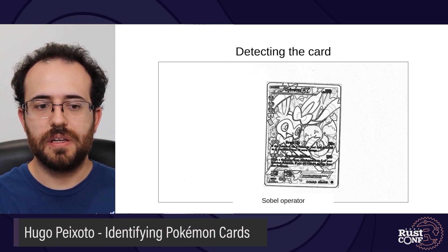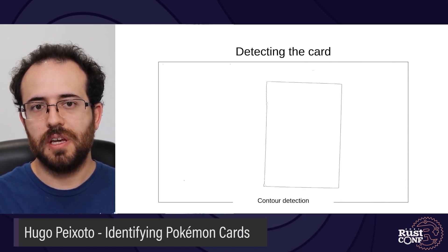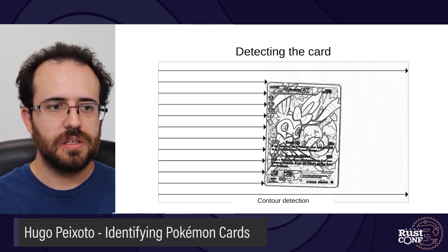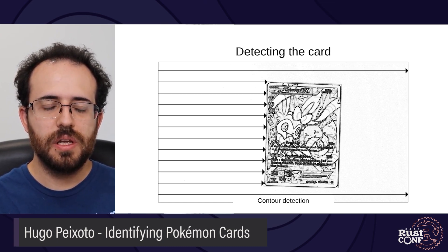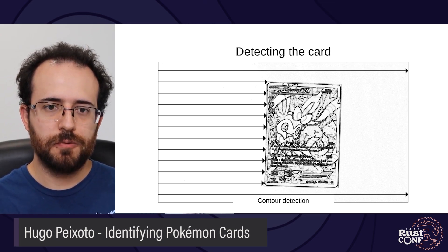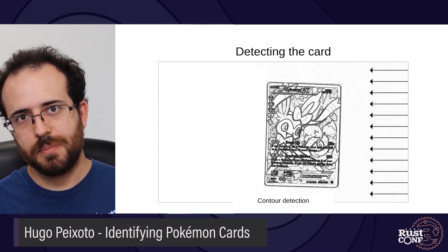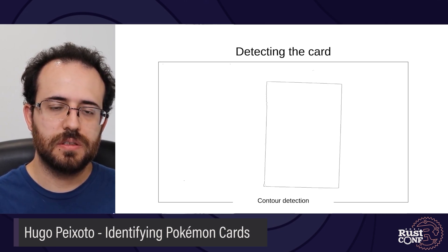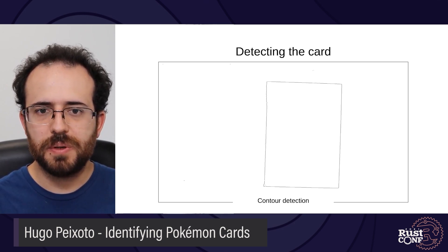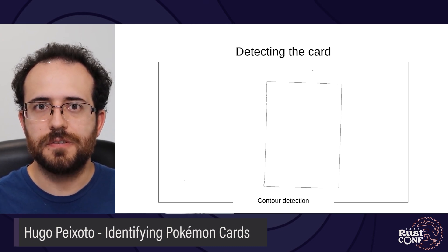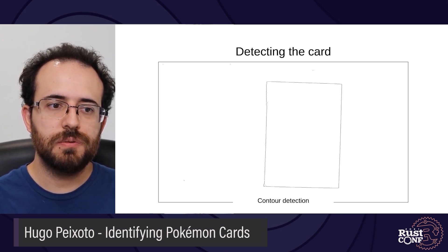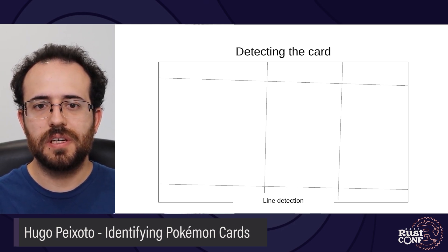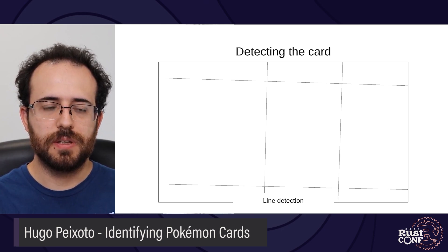The next step is to find the contour or outline of the card. I did this using a simple algorithm: we scan each row from left to right, and when we hit a pixel above a given threshold, we stop, mark that pixel, and move to the next row. We do this for every row, then the same from the other side, and from top to bottom and bottom to top. We end up with marked pixels forming the contour. This works because the card doesn't have any holes, concave structures, or anything like that. Once we have this, the next step is to turn this contour into four straight lines, using an algorithm called the Hough Transform.